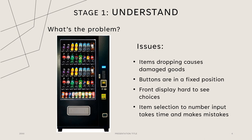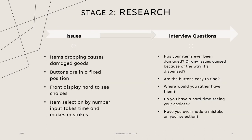Moving on from the initial phase of comprehending the soda machine and recognizing our own individual concerns, we move on to the second phase, which is research. This has us forming interview questions based on our issues to determine if others are also encountering similar difficulties from their perspective. Some of the questions we posed included: Has your item ever been damaged? Are the buttons easy to find? Where would you rather have them? Do you have a hard time seeing your choices? And have you ever made a mistake on your selection? These were based upon the issues we just came up with.